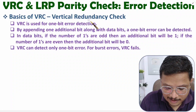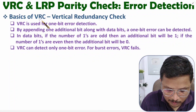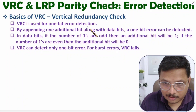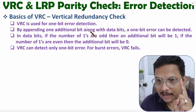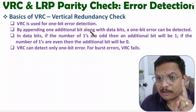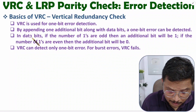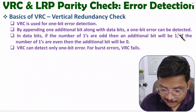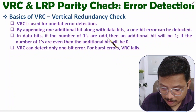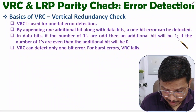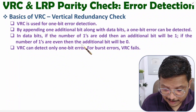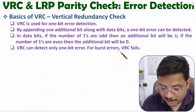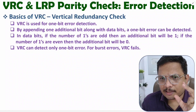VRC means Vertical Redundancy Check, and as mentioned, this is a one-dimensional parity check method. VRC is used for one-bit error detection only — remember, VRC cannot detect more than one bit error. By appending one additional bit along with the data bits, one bit error can be detected. If the number of ones in the data bits is odd, the additional bit will be one; if even, the additional bit will be zero. VRC fails for burst errors.